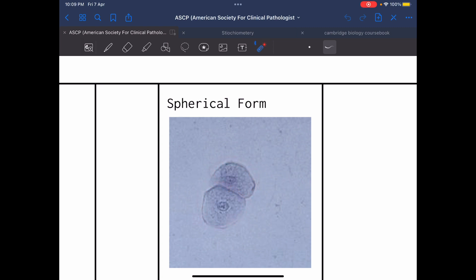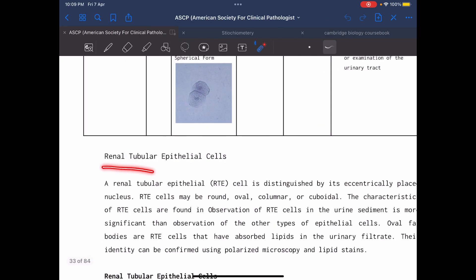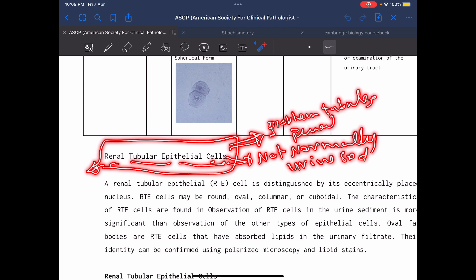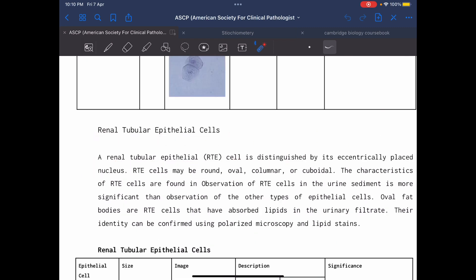The third type, which is important and not normally seen in urine sediment, is the renal tubular epithelial cells. If you see renal tubular epithelial cells, this means there is a problem in tubules or renal function.